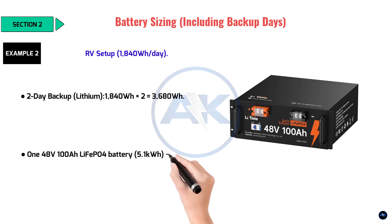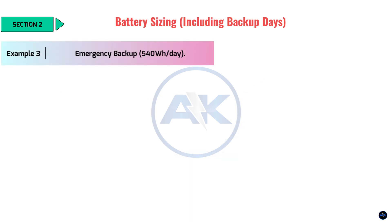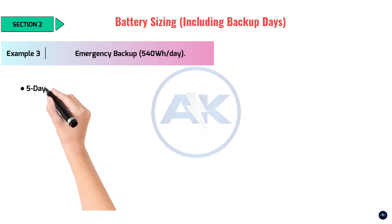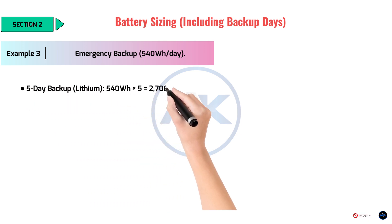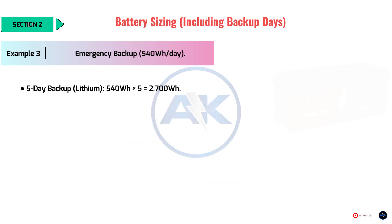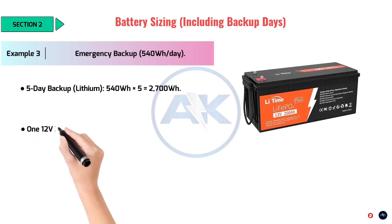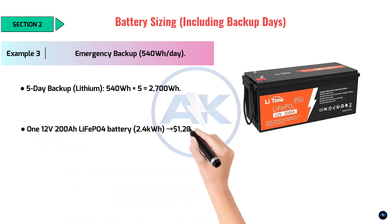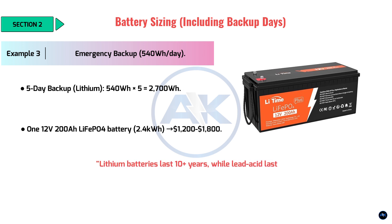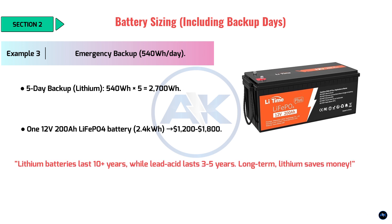Example 3: Emergency backup — 540 watt-hours per day, 5-day backup, lithium. 540 Wh × 5 = 2,700 watt-hours. One 12V 200Ah lithium iron phosphate battery = 2.4 kWh, costing $1,200–$1,800. Lithium batteries last 10+ years while lead acid lasts 3 to 5 years — long-term, lithium saves money.